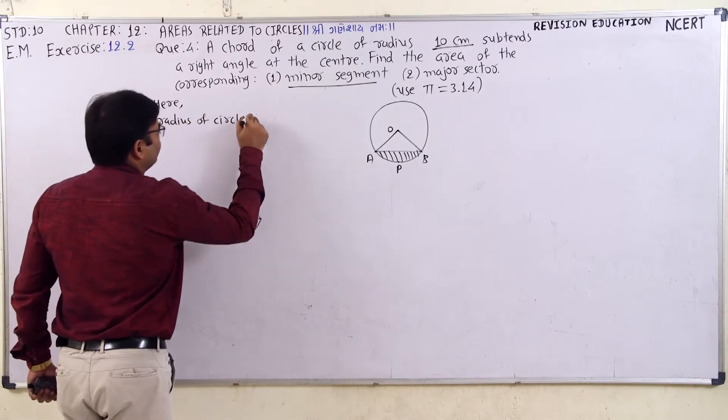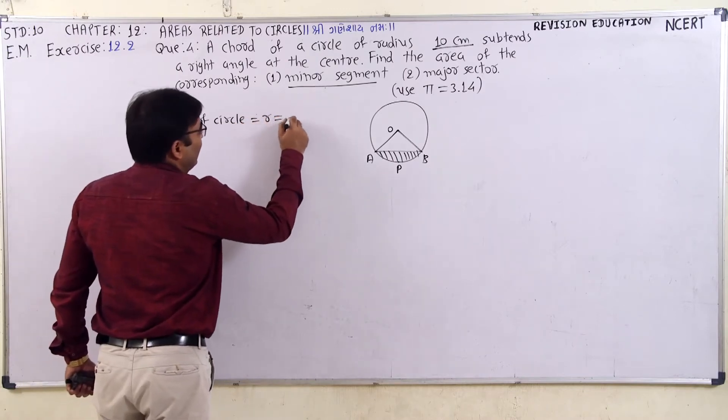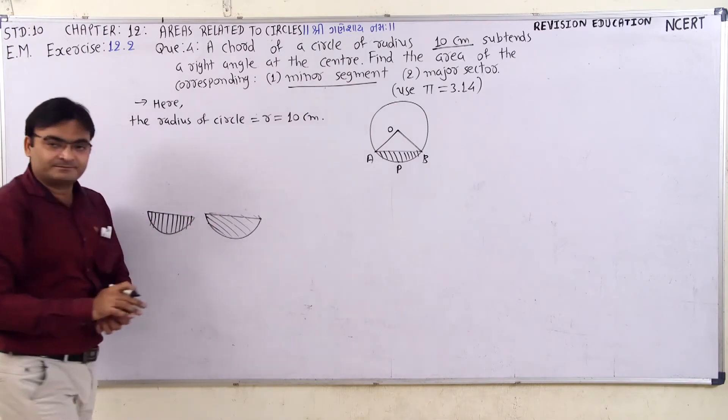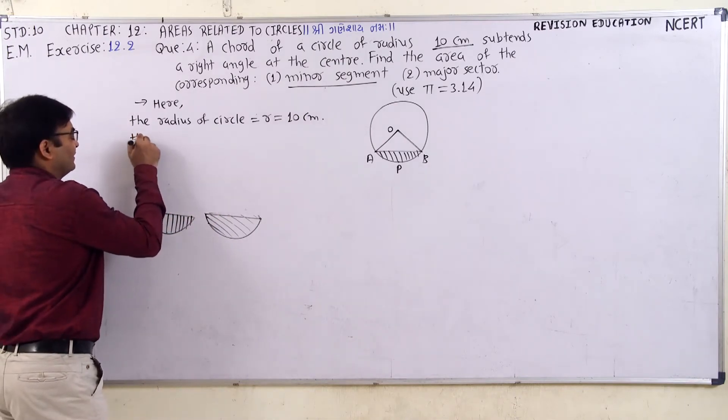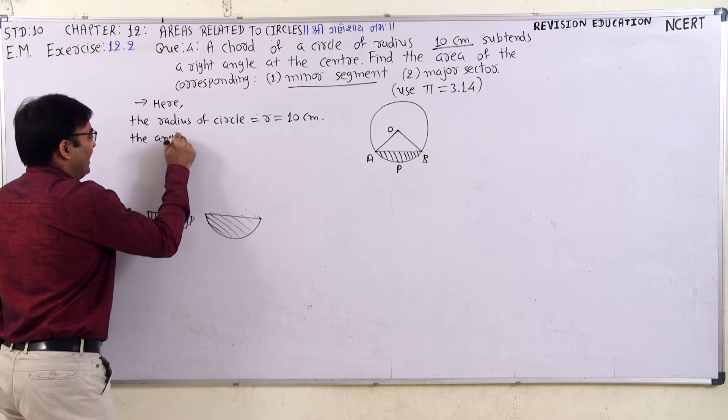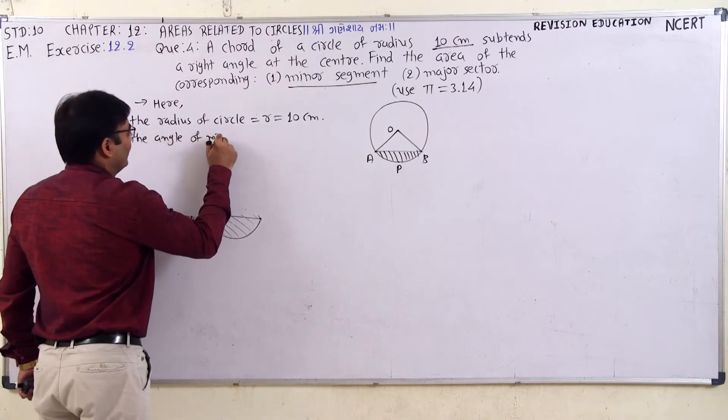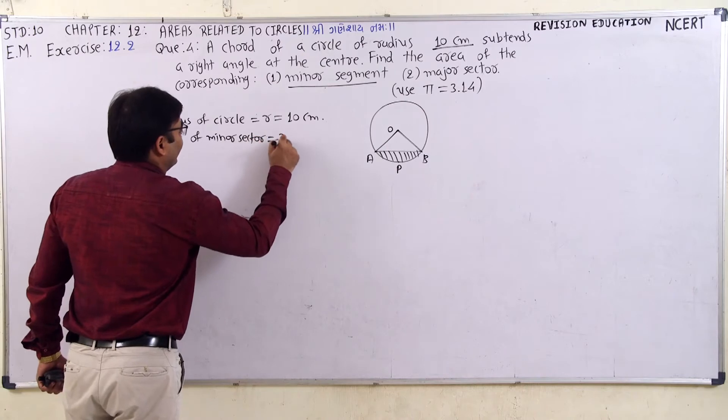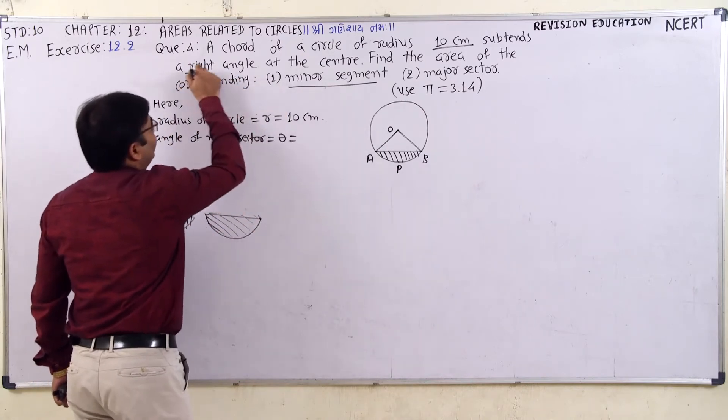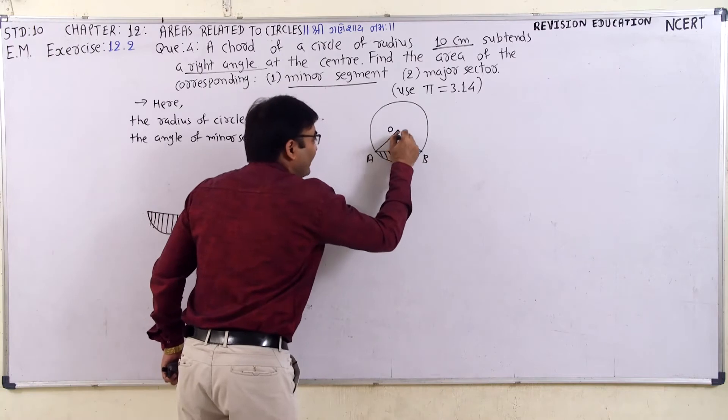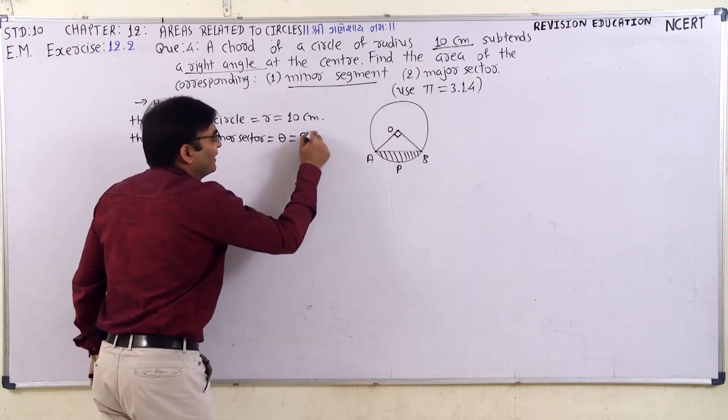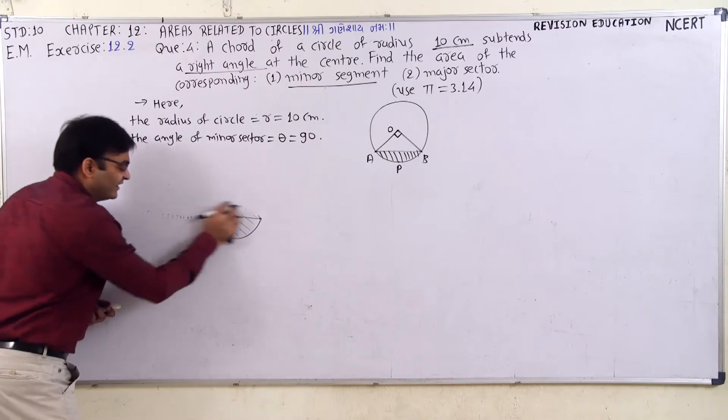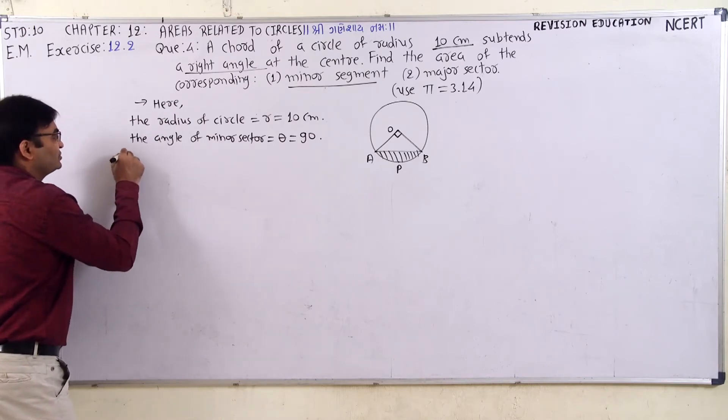So, radius of circle r is equal to 10 cm. The angle of minor sector, theta is equal to, it will be given right angle, either 90 degree angle can apply. So, the area of minor segment.